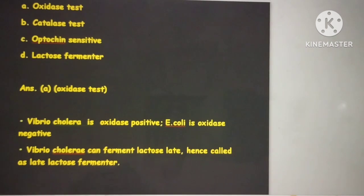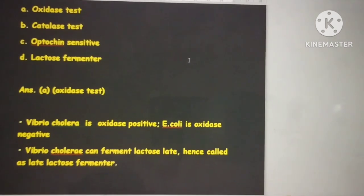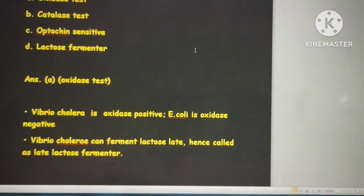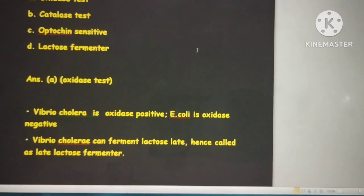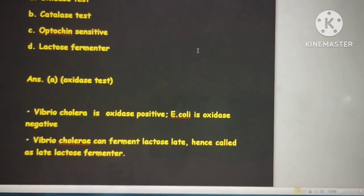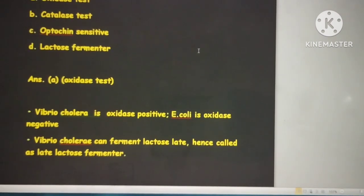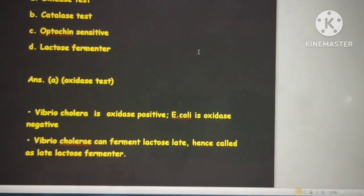Optochin test is mainly for Streptococcus. Bile solubility, inulin, and optochin sensitive - these three are sensitive for Streptococcus pneumoniae.